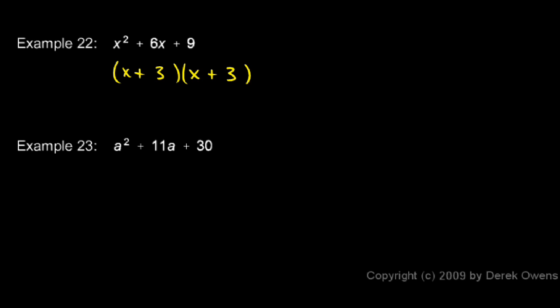You notice that here we have x plus 3 times x plus 3, which could be written as x plus 3 squared. So this is an example of what we call a perfect square trinomial. This trinomial is equal to something squared.